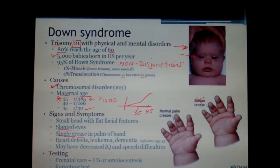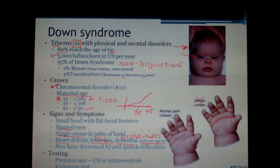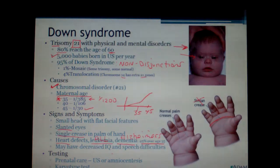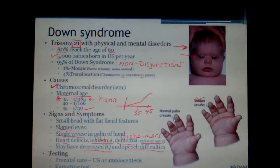Down syndrome patients also tend to have heart defects, leukemia — especially acute lymphocytic leukemia — and Alzheimer's dementia. 25% of those over age 35 develop Alzheimer's, which is a very high percentage. These complications — ALL, Alzheimer's, and heart defects — are obviously quite significant. They usually also have decreased IQ and speech difficulties.